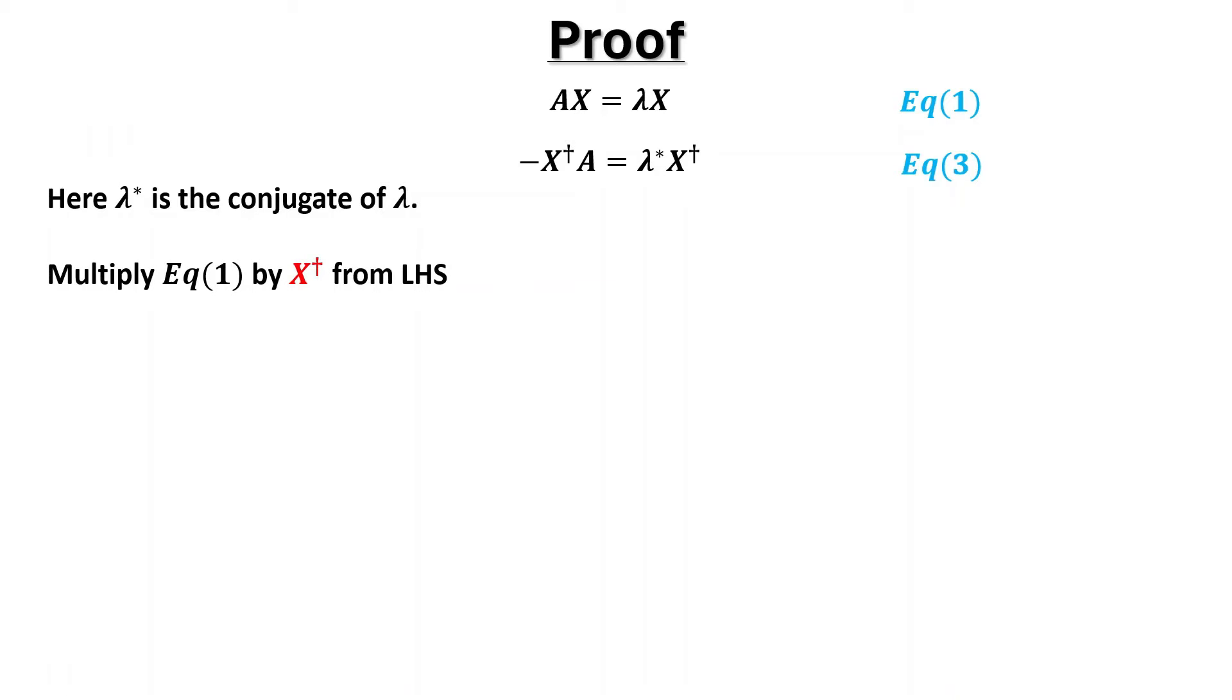Multiply equation 1 by x dagger from left hand side. We have equation 4. Now multiply equation 3 by x from right hand side. We have equation 5-1.